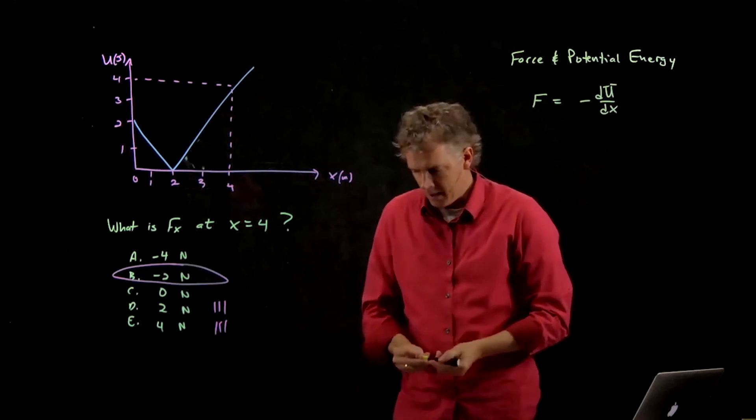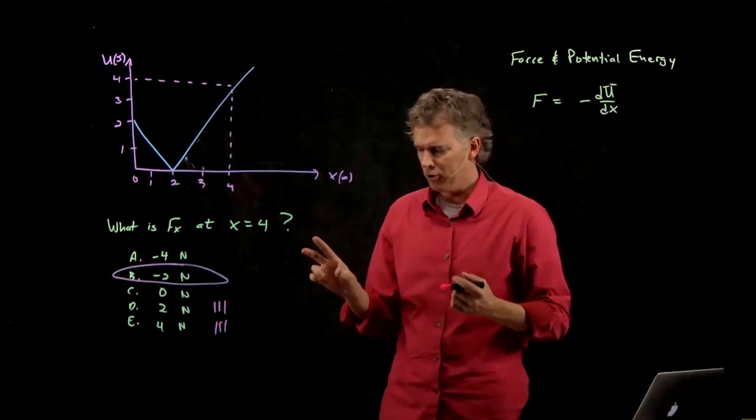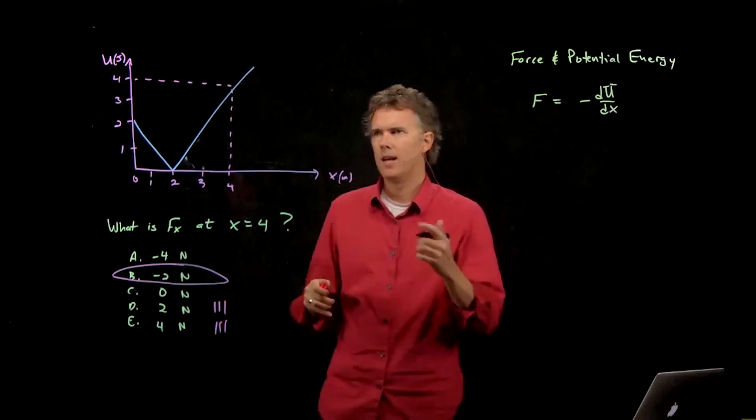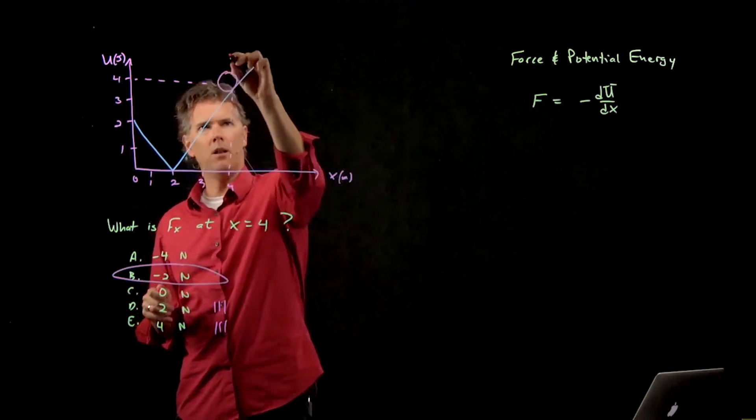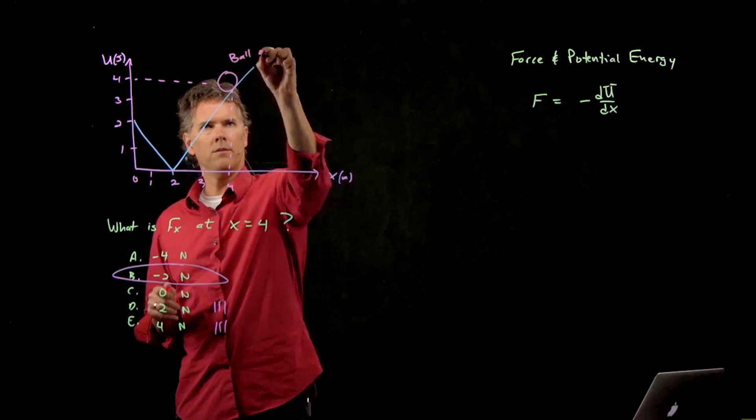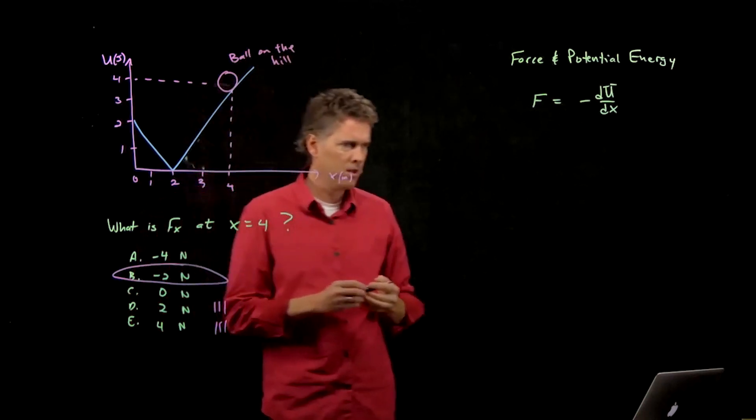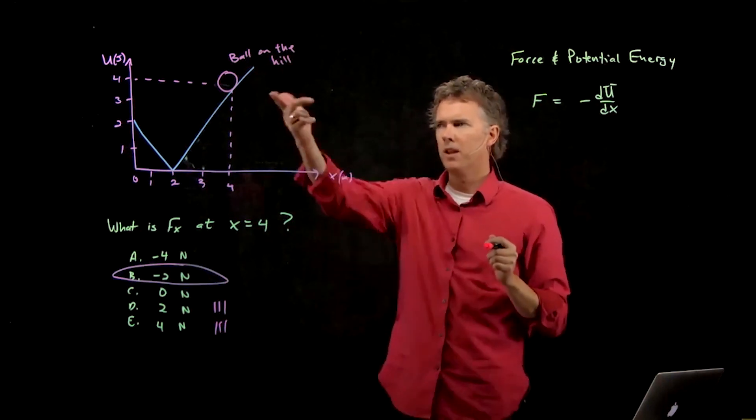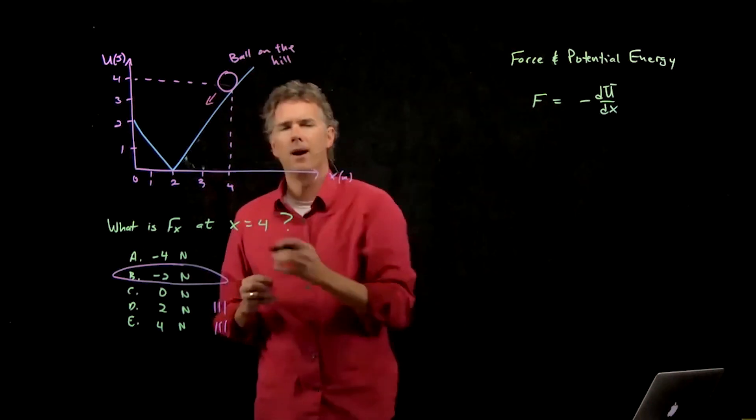Now, when you look at potential energy curves, there's a very nice way to double check whether you're thinking about it correctly or not. And that is, put a ball on the hill. If this potential energy curve is a hill, the ball will tell you what's going to happen. What's going to happen to the ball on the hill? It's going to roll down the hill, right? It's going to head that way.